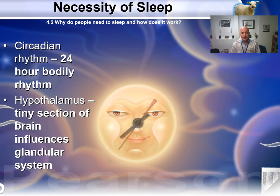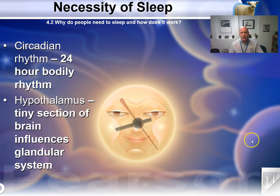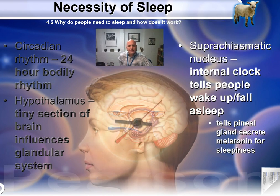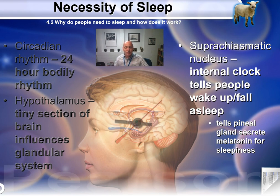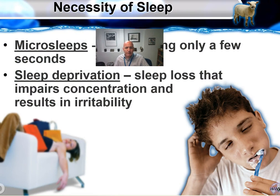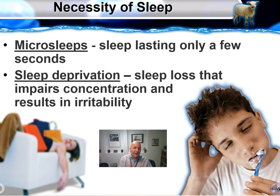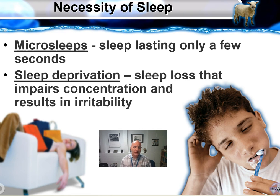Sleep is regulated by the hypothalamus, a tiny section of brain that influences glandular systems. Your suprachiasmatic nucleus is an internal clock that tells you when to fall asleep and when to wake up. It communicates with the pineal gland, which secretes melatonin and helps you get sleepy. Males typically need six to eight hours of sleep a night, and females typically need seven to nine.